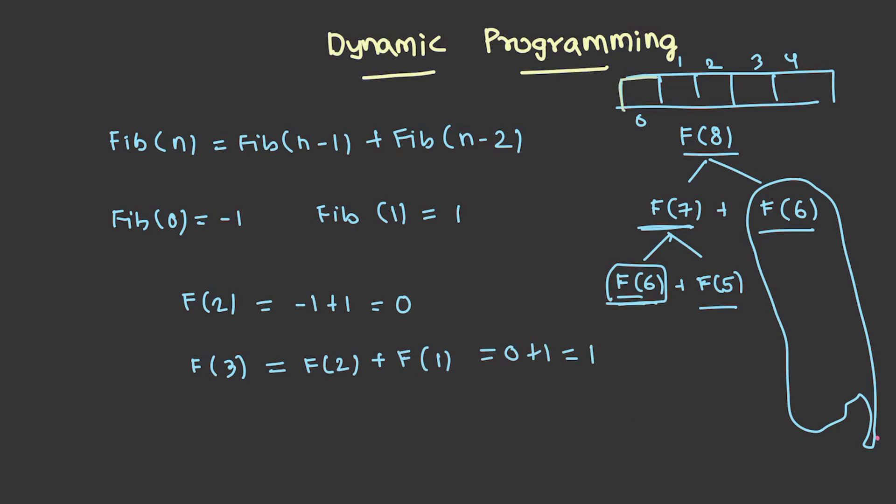Whenever I calculate the value of Fibonacci of 0 which is -1, I will put -1 here, then 1. Fibonacci of 2 is 0, then 1, 1, 2, and so on.